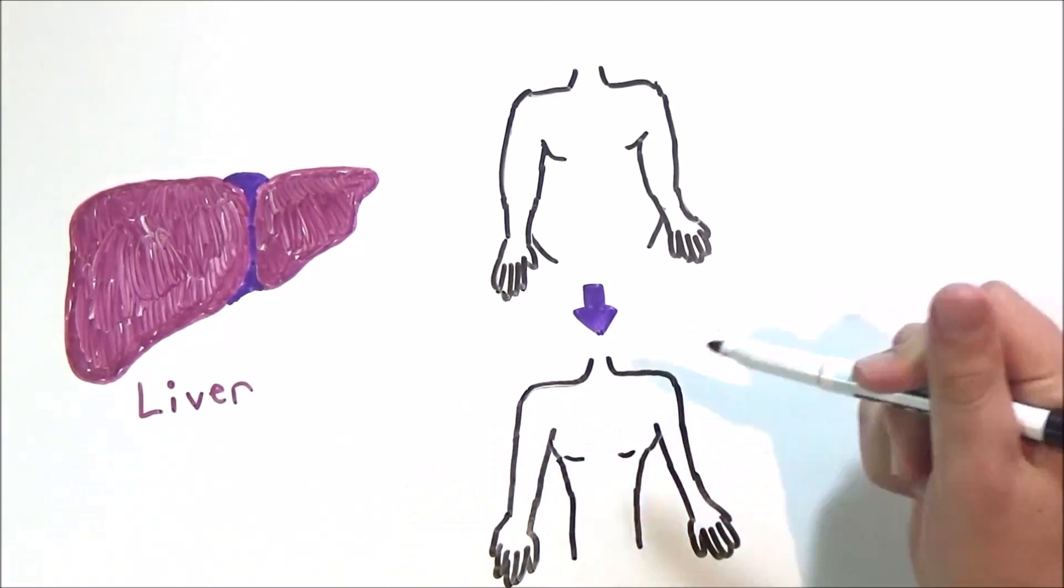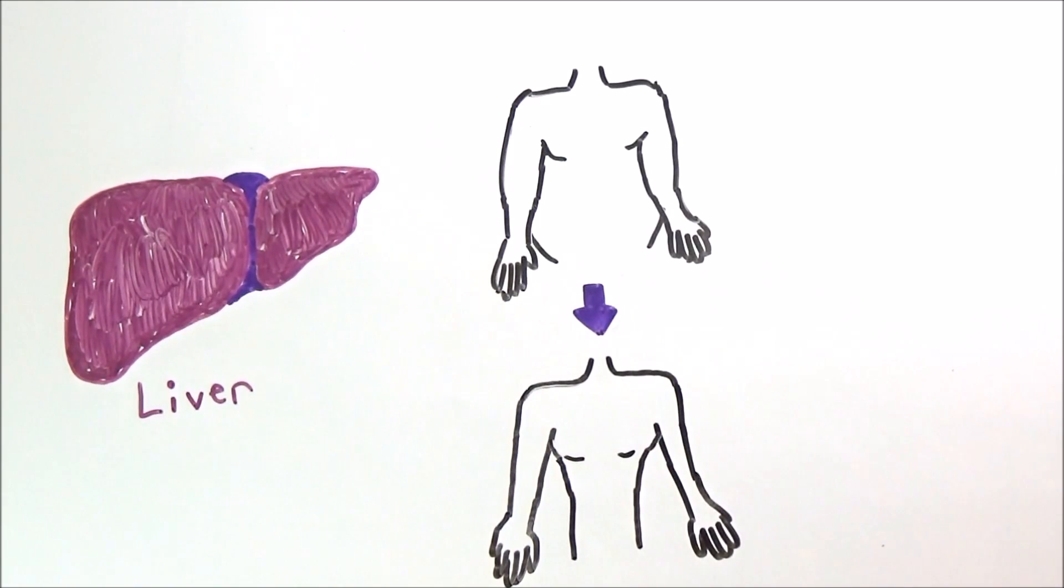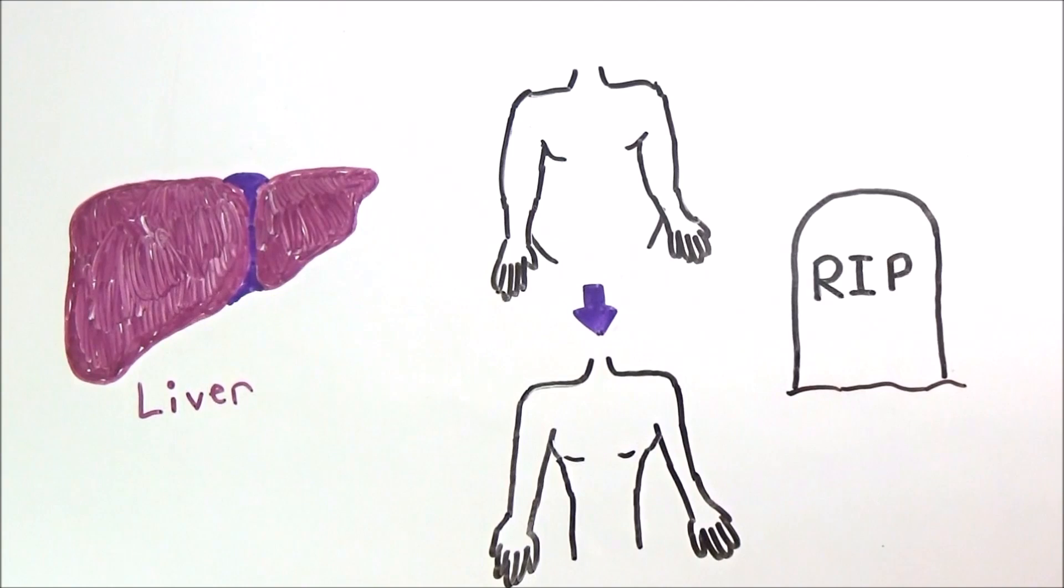the body will revert to breaking down fat and some muscle for fuel. Eventually, the fat being used for fuel will run out and the body will revert to breaking down much more muscle. Once this happens, death results from loss of organ function.